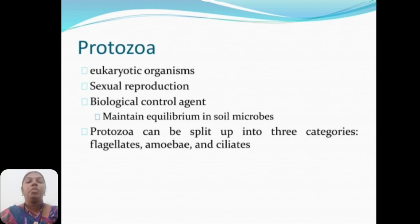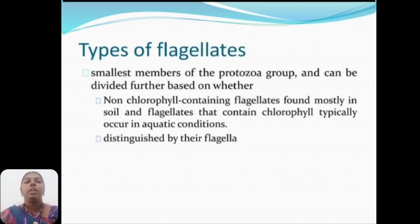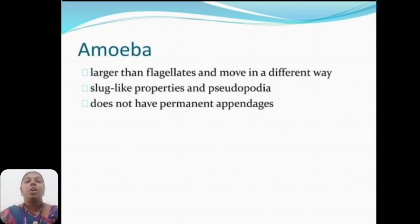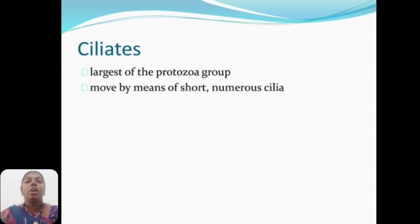Protozoa are eukaryotic organisms with sexual reproduction and act as biological control agents to maintain equilibrium in soil microbes. Protozoa can be split into three categories: flagellates, amoeba, and ciliates. Flagellates are the smallest members of the protozoa group; non-chlorophyll-containing flagellates are found mostly in soil, while those containing chlorophyll occur in aquatic conditions, distinguished by their flagella. Amoeba are larger than flagellates, with slug-like properties and pseudopodia, and do not have permanent appendages. Ciliates are the largest of the protozoa group and move by means of numerous cilia.